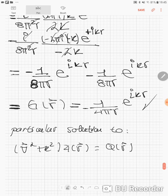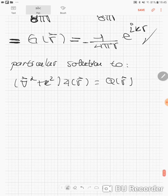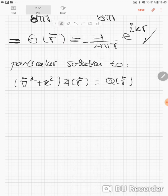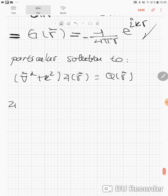The particular solution, which is different than the total solution, is given in terms of the Green's function. Psi particular of R is the integral over d³r prime of the Green's function of R minus R prime times Q of R prime.